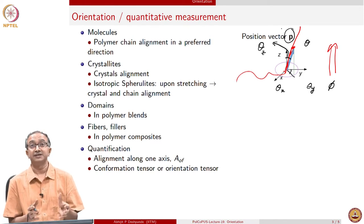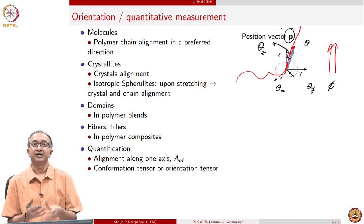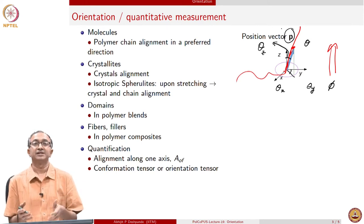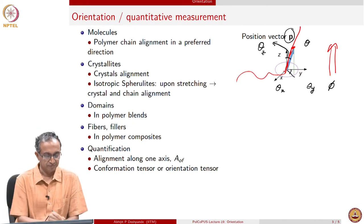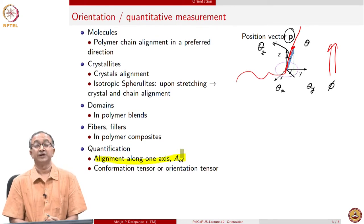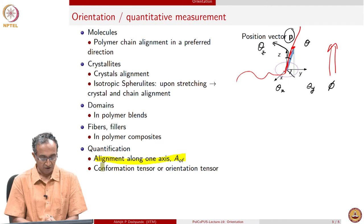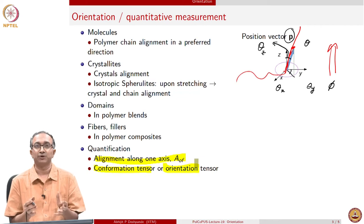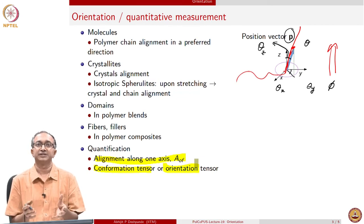The complication is that when we have a bulk macromolecular sample — a sheet or a molded part — we have lots and lots of macromolecules. When we say orientation, we are interested in average orientation. The quantification factors — one called the orientation factor, or the conformation or orientation tensor — are necessarily average quantities which can quantify and tell us on average what is the orientation in the sample.